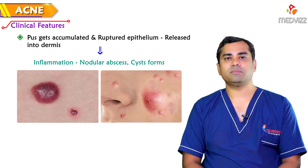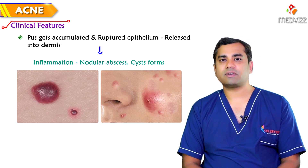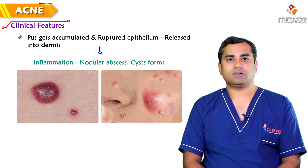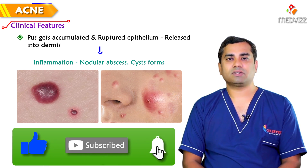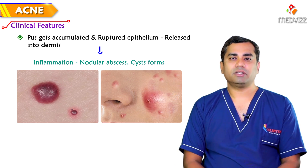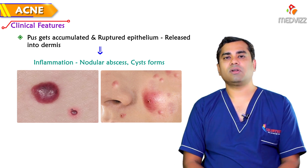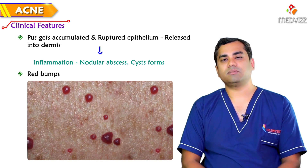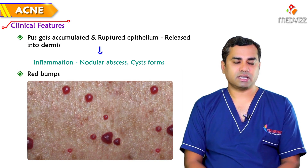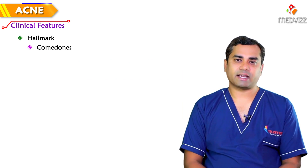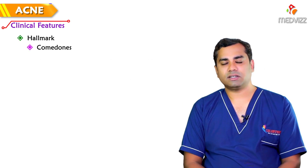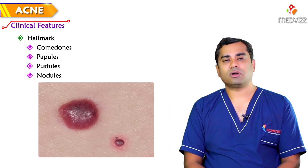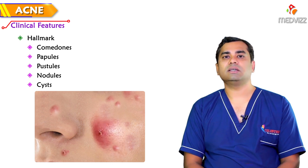Understanding the pathogenesis of acne is very important to understand its clinical features. Many doctors with basic dermatology knowledge assume only red bumps are manifestations of acne — that is not the case. Comedones are the hallmark of acne vulgaris, followed by papules, then pustules as the third stage, nodules as the fourth stage, and cysts as the last stage.